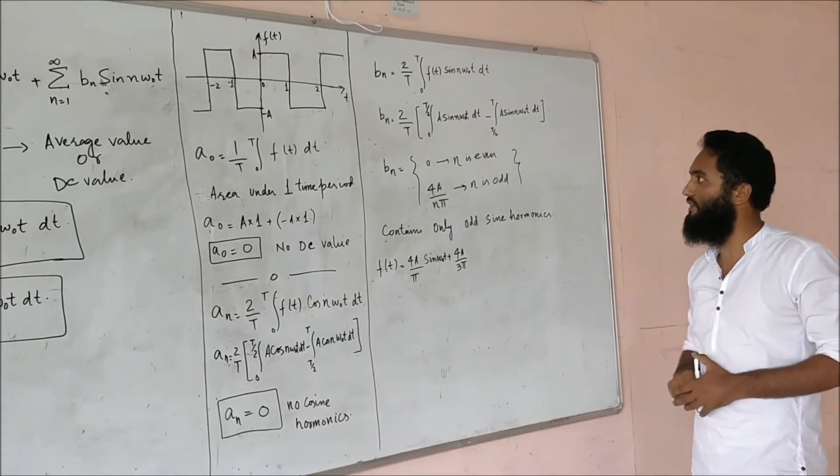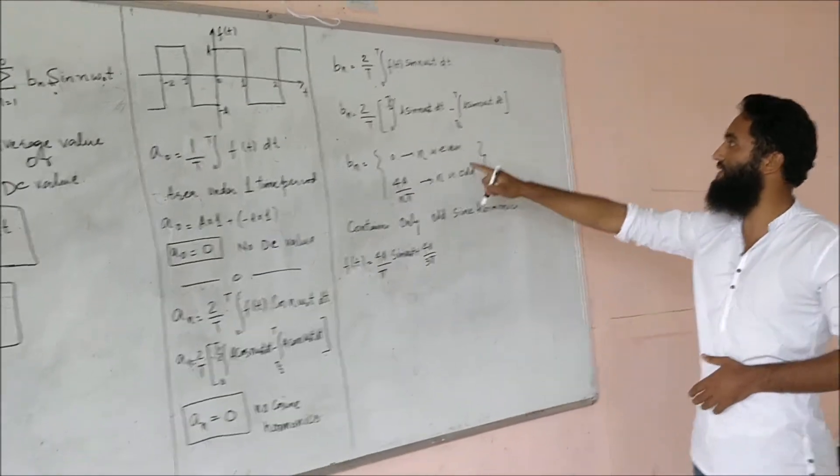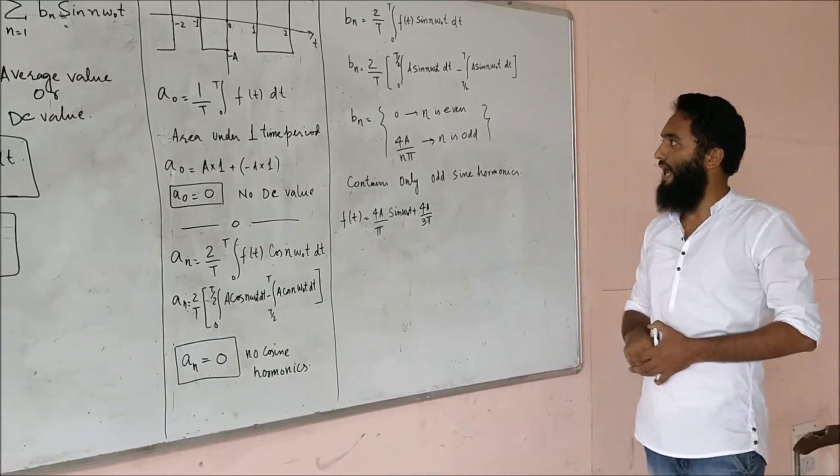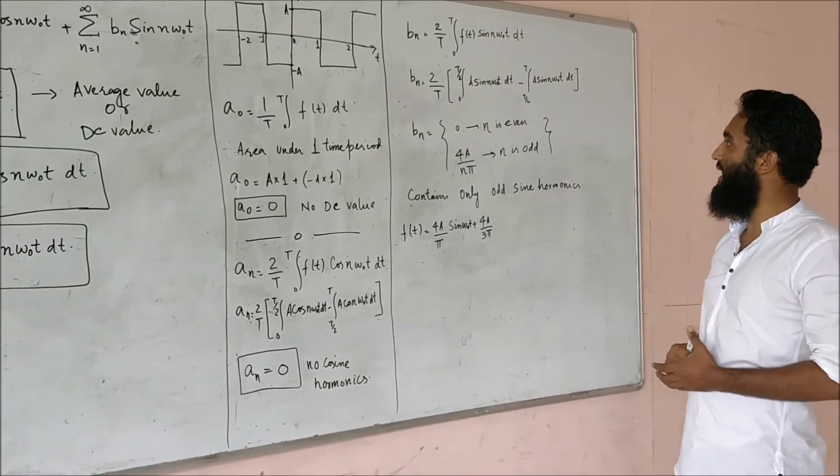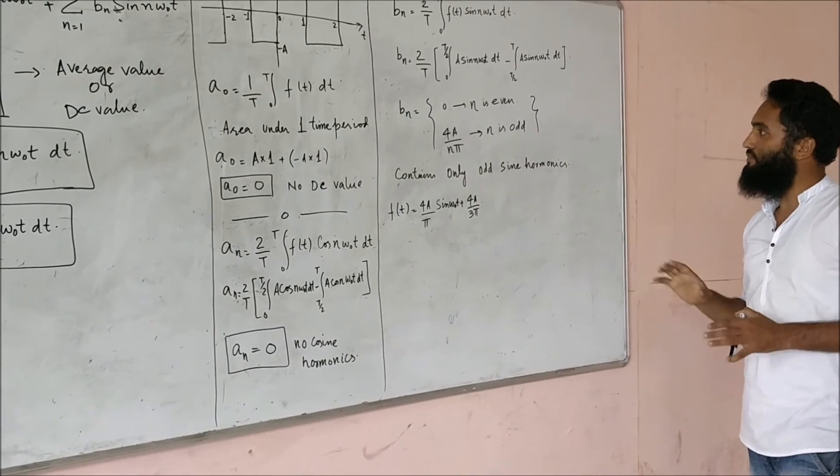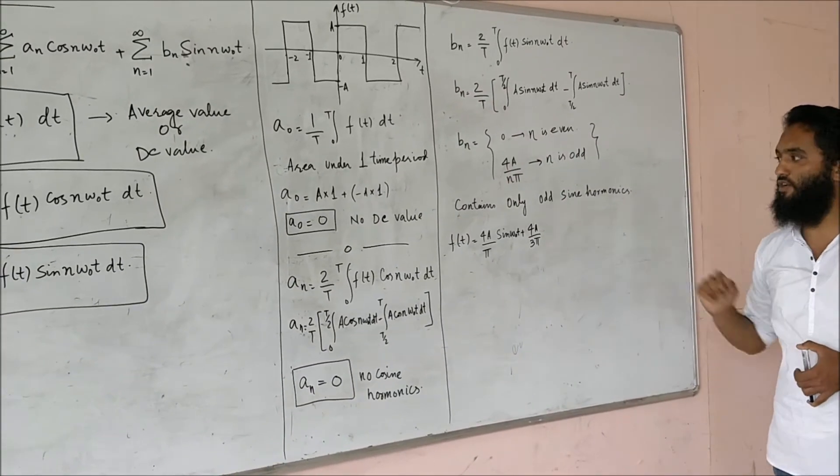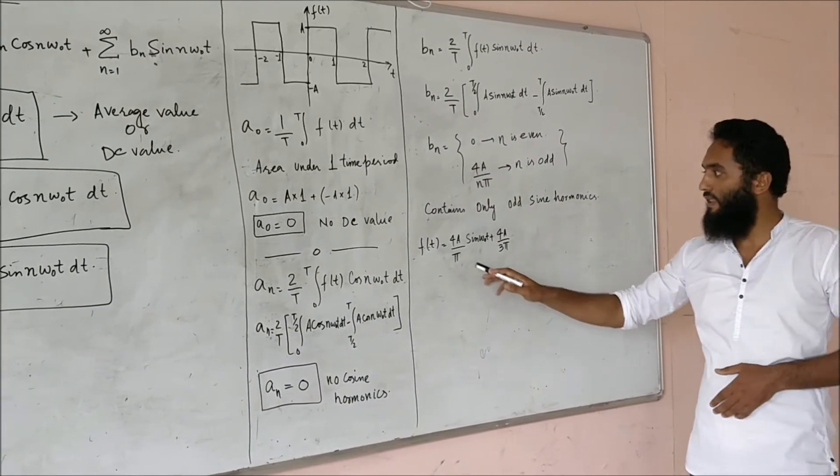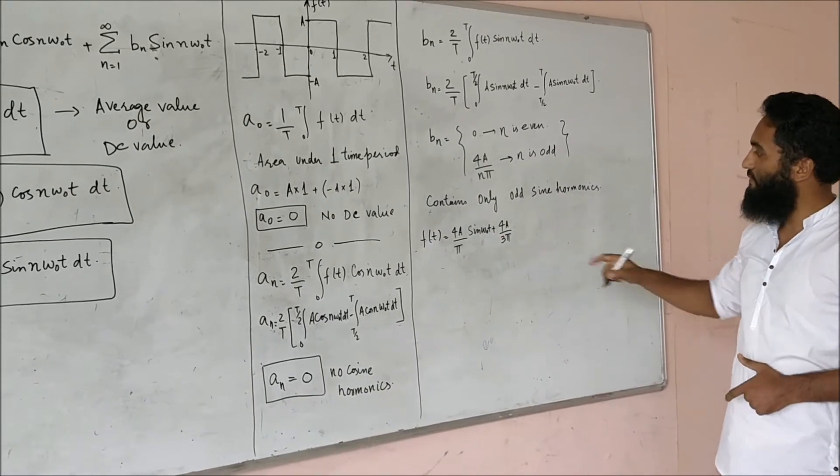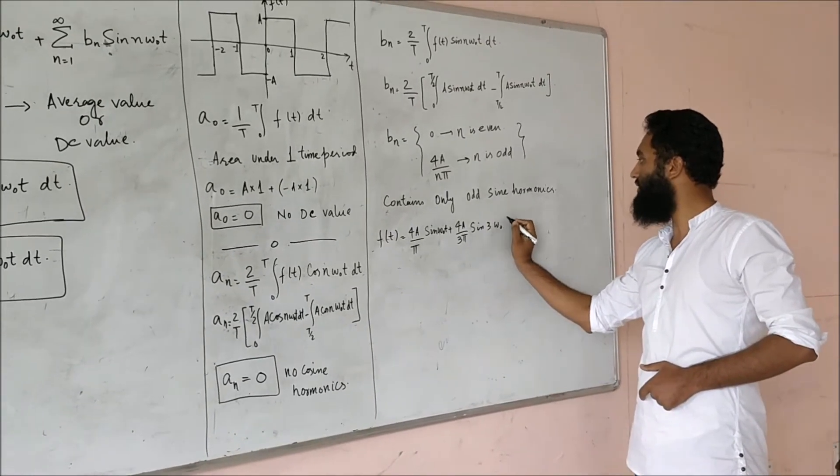The value of b_n will attain 0 values if I take n as even, suppose 2, 4, 6, 8 and so on. And this attains a value 4A by n pi if n is taken as odd. We came to a conclusion that this signal contains odd sine harmonics, which will be 4A by pi sin(omega_0 t), another one will be 4A by 3 pi sin(3 omega_0 t), and another one will be 4A by 5 pi sin(5 omega_0 t) and so on.